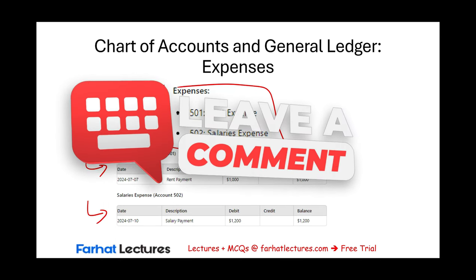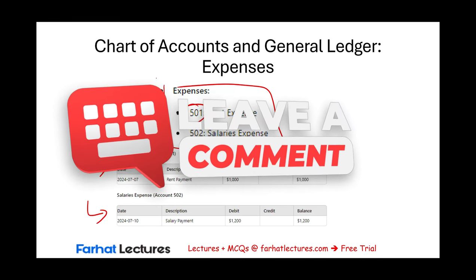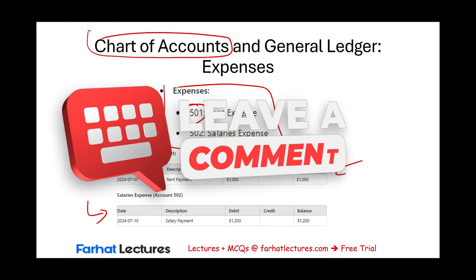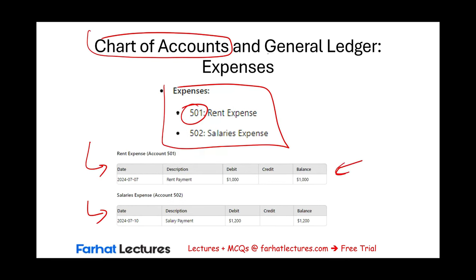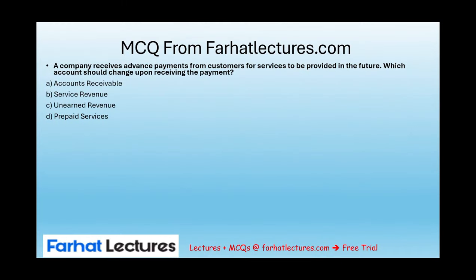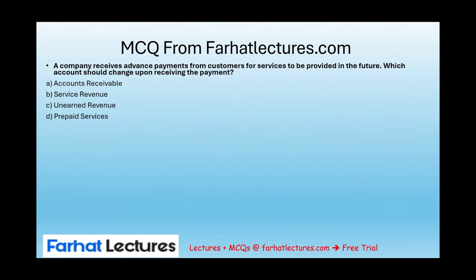In summary: all accounts with their identification numbers form the chart of accounts, and the accounts themselves — where we keep track of changes — make up the general ledger. The general ledger is essentially each individual account keeping track of its own changes.